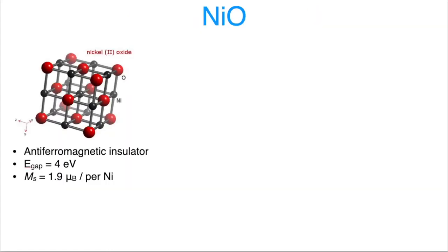Let me show you a classical example of nickel oxide. It's a transition metal oxide, and you can see here its crystal structure. Nickel atoms are surrounded by oxygens which form an octahedron. From experiment we know that this material is an antiferromagnetic insulator — it has a gap of about 4 eV, and the magnetic moment per nickel atom is roughly 2 Bohr magnetons.